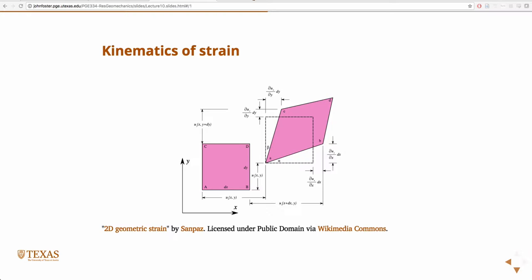And so, the strain in the X direction is going to be the change in AB, the magnitude of AB, minus AB over AB.